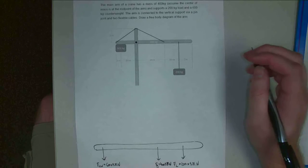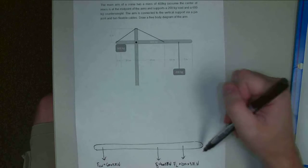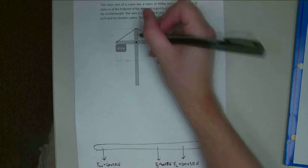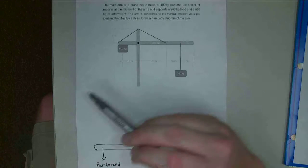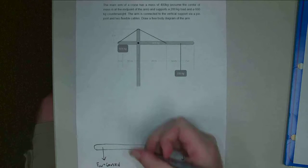So those are the weight of the arm itself and the two loads on the arm. I'm going to have a pin joint here. So what a pin joint does, a pin joint will prevent motion in the x and y direction, but it allows this whole thing to rotate. So there's no moment there.